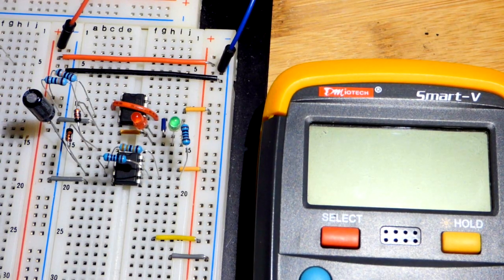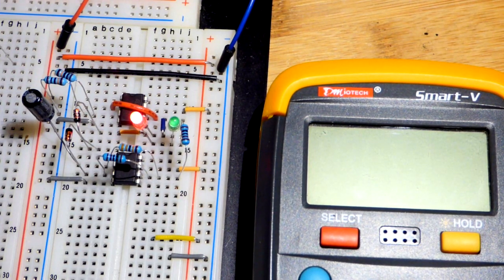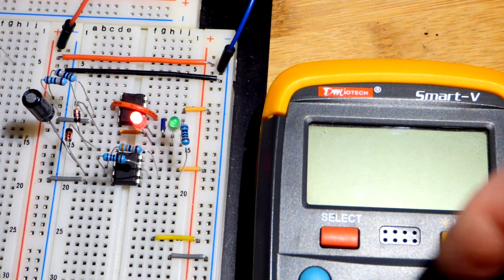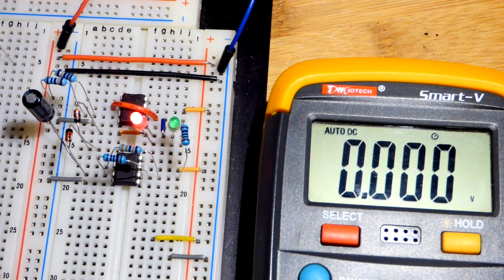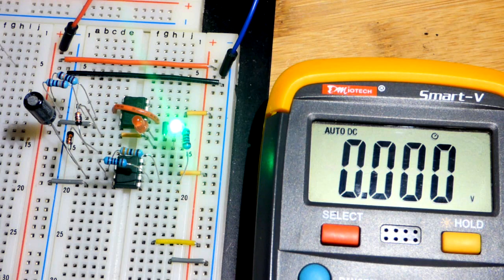So now, hopefully I wired everything alright. We will turn the power on. And this is a slow oscillation. They are going to take a little while to go back and forth. There we go. It finally flipped.